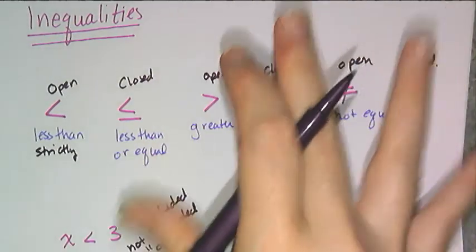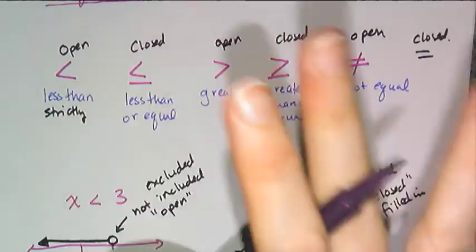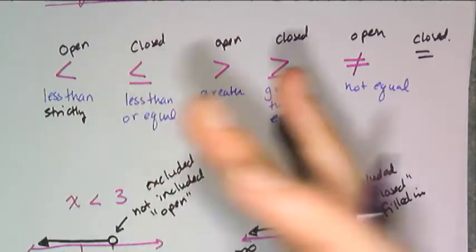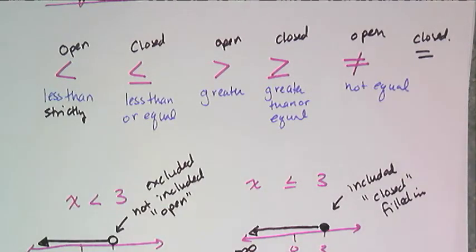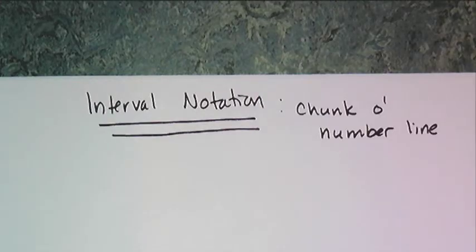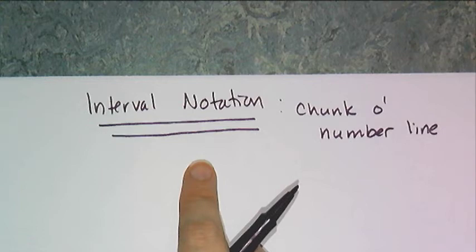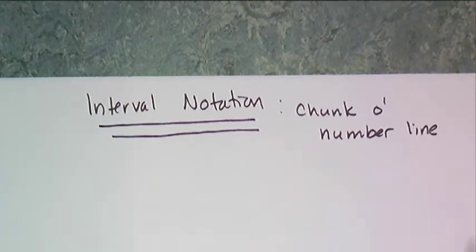Now it gets really inconvenient to have to draw a number line every time you have an inequality, so mathematicians came up with a brand new way of writing parts of the number line without actually drawing the number line. It's called interval notation, and it means the same thing as these inequalities and the same thing as this graph, but it just looks a little different. I'm going to show you interval notation because that's the more advanced notation — the notation you're going to use in pre-calculus and calculus and beyond.